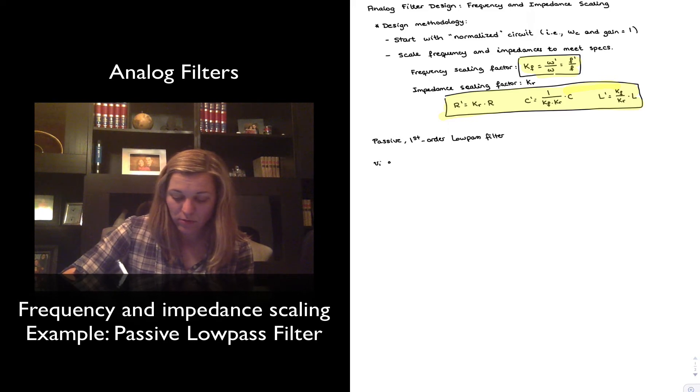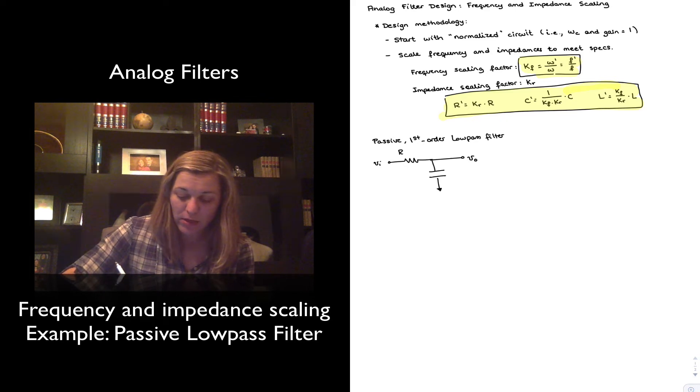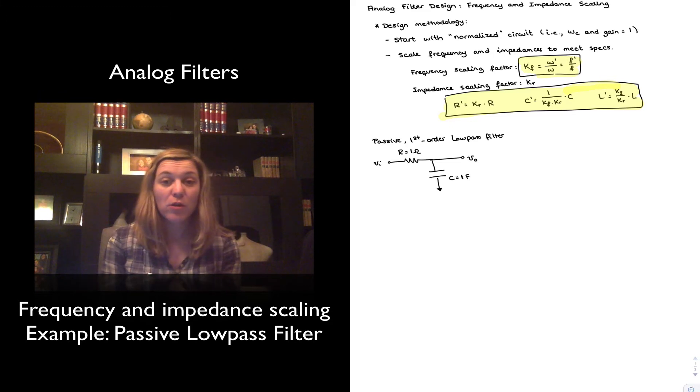And that consists, as we are all aware, of a resistor in series with a capacitor. The input is applied at one terminal of the resistor, the output is taken across the capacitor. And the normalized version of this circuit is one where both the resistor and the capacitor have a value of one. One ohm for the resistor, one farad for the capacitor.